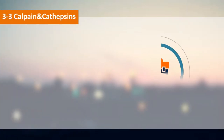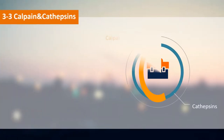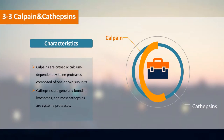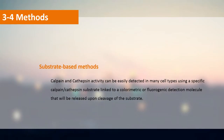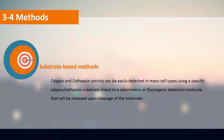Calpains are cytosolic calcium-dependent cysteine proteases composed of one or two subunits. Cathepsins are generally found in lysosomes, and most cathepsins are cysteine proteases. Calpain and cathepsin activity can be easily detected in many cell types using a specific calpain/cathepsin substrate linked to a colorimetric or fluorogenic detection molecule that will be released upon cleavage of the substrate.